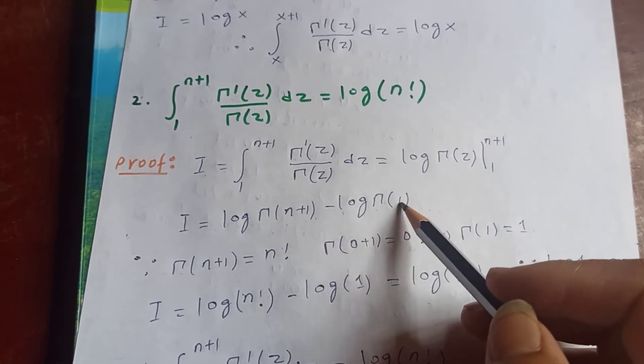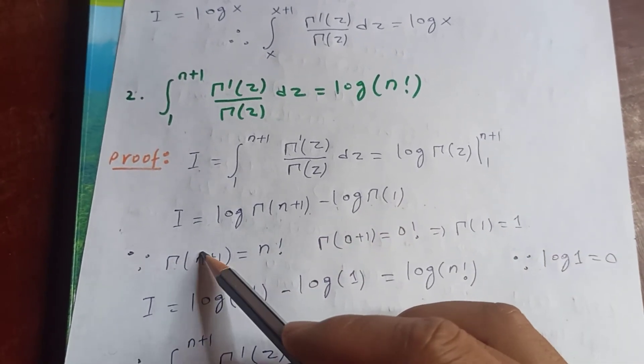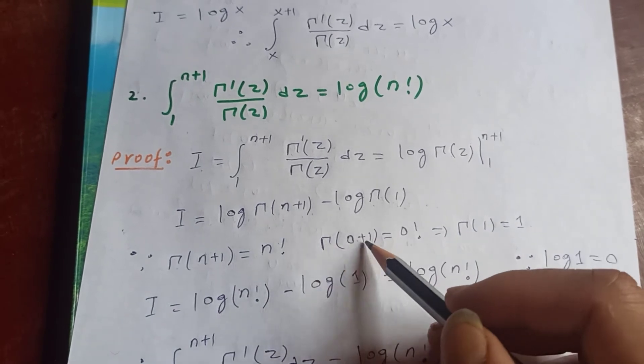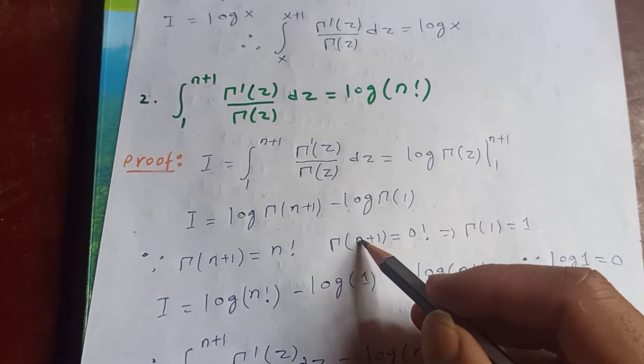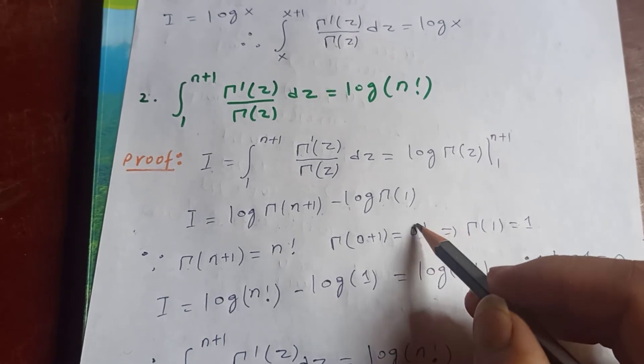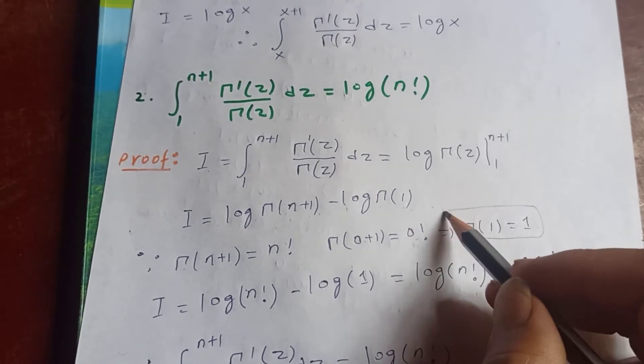Therefore we are trying to find out gamma of 1. If you put here n equal to 0, so gamma of 0 plus 1 is 0 factorial, which is 0 plus 1 is 1. Gamma 1 is 0 factorial is 1. So gamma 1 is 1.